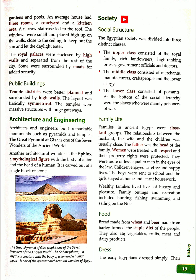Society was divided into three distinct classes: upper, middle, and lower. The upper class consisted of royal and rich families. The middle class consisted of merchants, craftsmen, and clergymen. The lower class consisted of peasants.